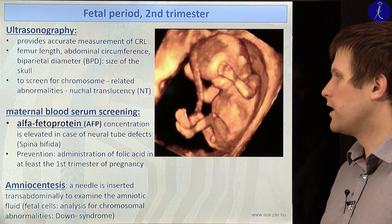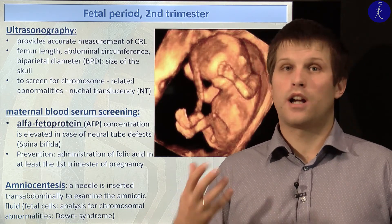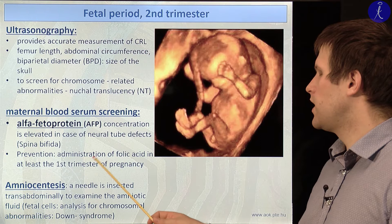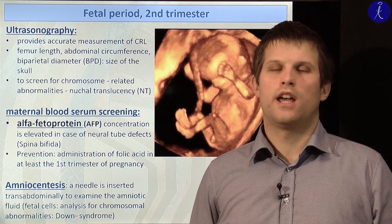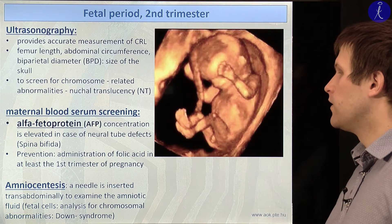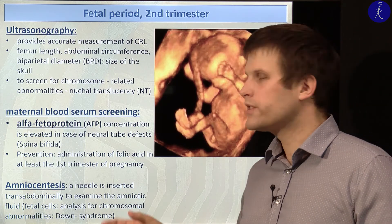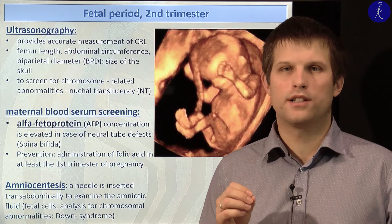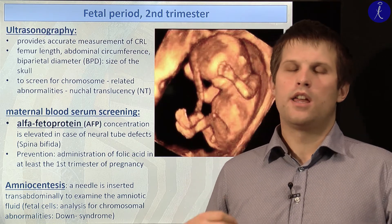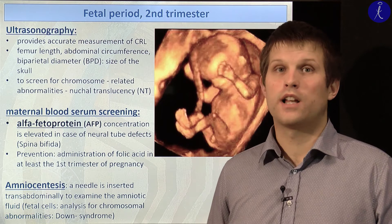Sometimes we can prevent these defects — in the case of spina bifida or neural tube defects, we can prevent them by administration of folic acid, which is highly recommended during pregnancy and a little before. We also have the option of amniocentesis, where we collect amniotic fluid containing embryonic cells, and on these cells we can analyze chromosomal abnormalities such as extra chromosomes or smaller detectable deletions.